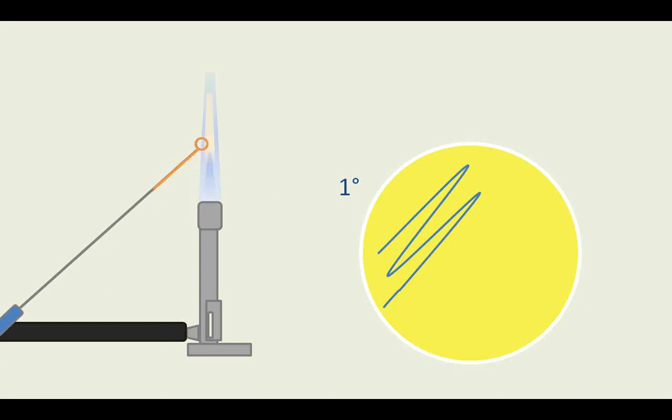Now flame the loop. This kills whatever cells are remaining on the loop, so that no additional bacteria are brought onto the plate. Remember, the idea is to dilute the bacteria to get individual, well-separated colonies.